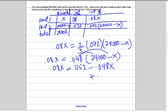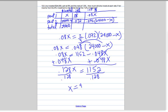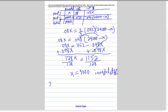So add 0.048X to both sides. These cancel. We get 0.128X equals 1,152. Divide both sides by 0.128. So X equals $9,000. That means the total invested at 8% is $9,000. So $24,000 minus $9,000 is $15,000 — that's the total invested at 7.2%.